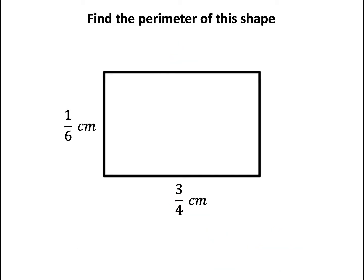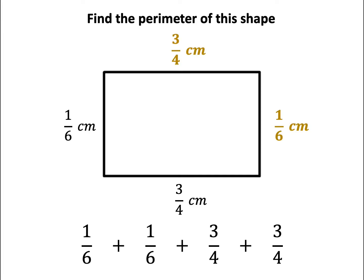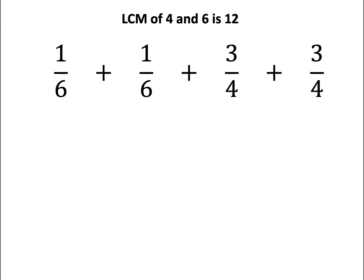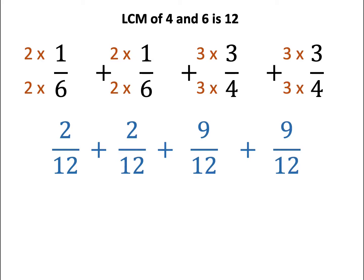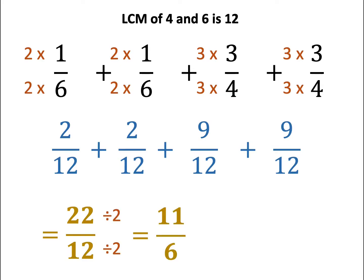How about this question? The shape is a rectangle. The special feature of a rectangle is that the opposite lengths are equal, so now we have four fractions to add together. We find the lowest common multiple of 4 and 6, which is 12. Multiplying 6 by 2 and 4 by 3, and applying the same to the numerators, we add the numerators to get 22 out of 12. Simplifying by dividing by 2 gives 11 out of 6. Converting to a mixed fraction, the final answer is 1 and 5 out of 6 centimetres.